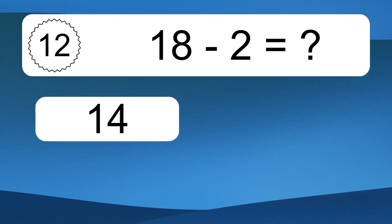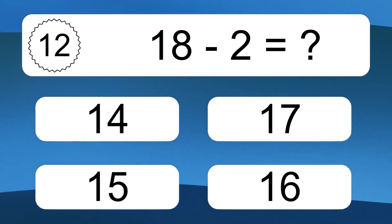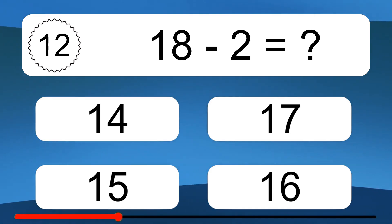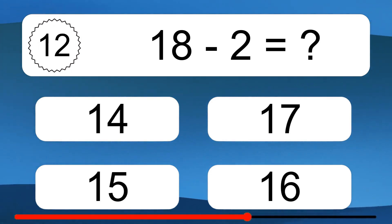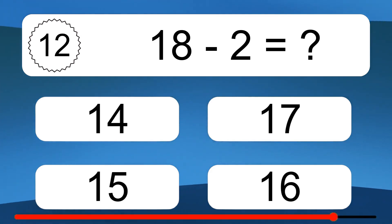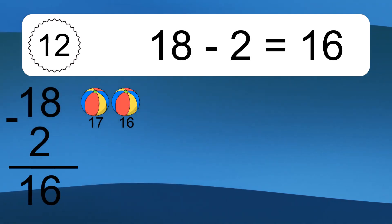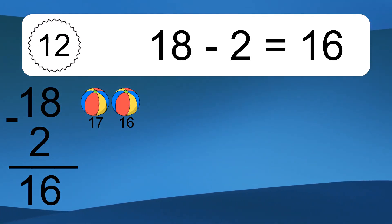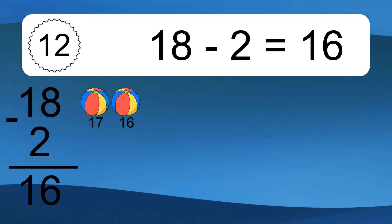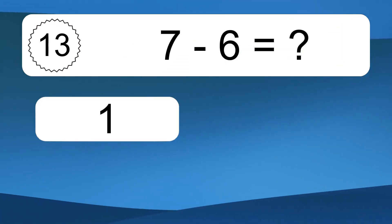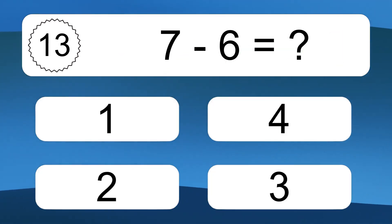18 minus 2 equals what? 18 minus 2 equals 16. Let's count it. 17, 16.